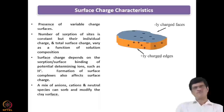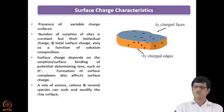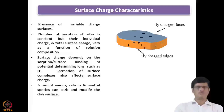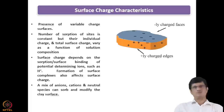Coming to the surface charge characteristics of these minerals, the figure shows that the faces are negatively charged and the edges have positive charge. So they will actually be binding with cationic as well as anionic species — cationic species binding with the faces and anionic species binding with the edges. In this case with variable charge surfaces, the number of surface sites is constant but their individual charge and total surface charge vary as a function of solution composition.